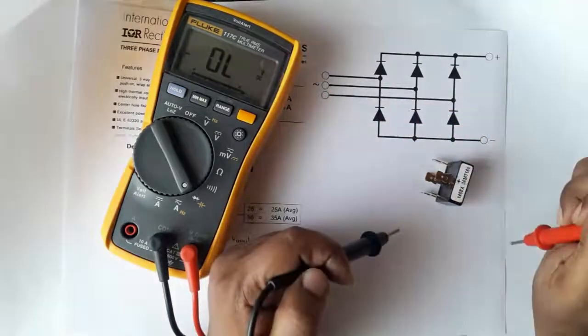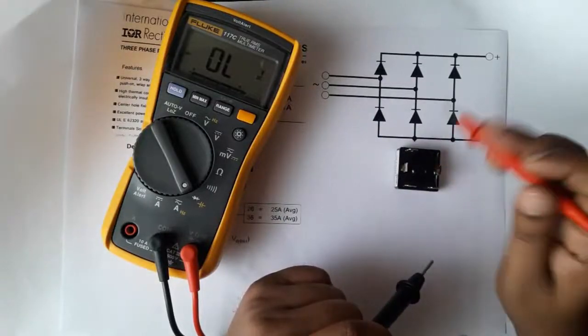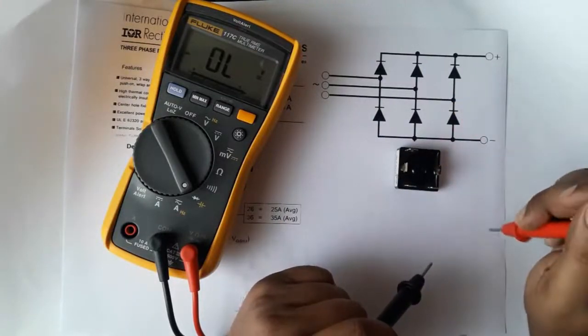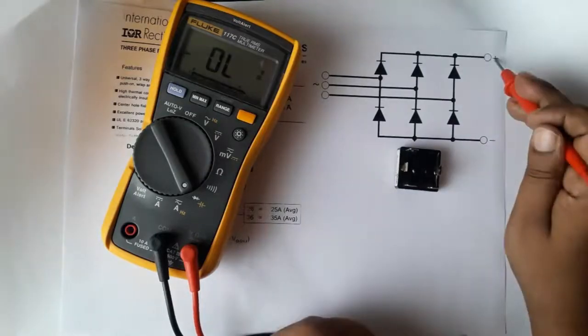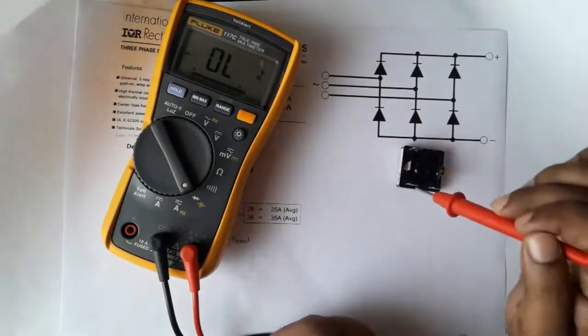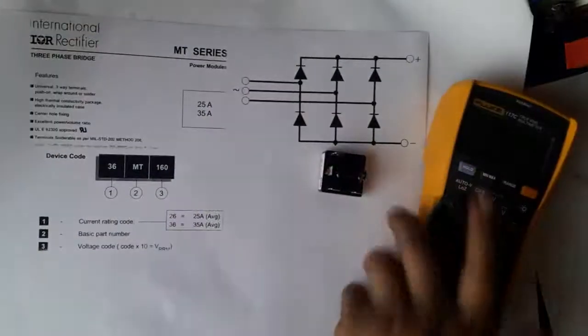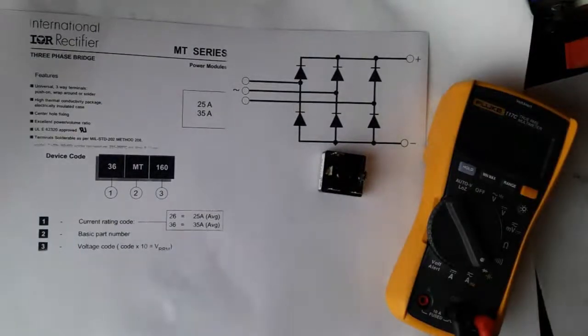Bridge rectifier—all six diodes are assembled in a three-phase bridge rectifier. So this is an IOR rectifier three-phase power module used for converting AC to DC.